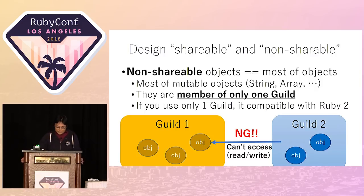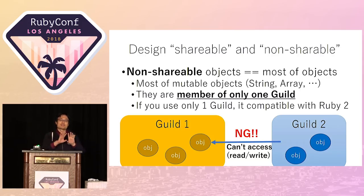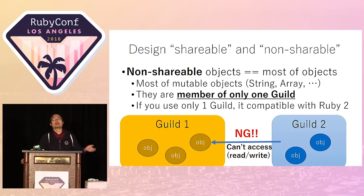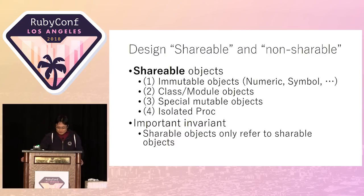If you use only one Guild, it is very compatible with Ruby 2 — the current version of Ruby — so you can make programs compatible with both Ruby 2 and Ruby 3 very easily. We define four types of shareable objects. In other words, all objects other than these four types are non-shareable.